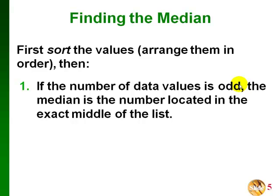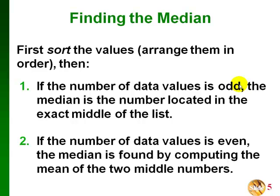If the number of data values is odd, then the median is just the number located in the exact middle of the list. If the number of data values is even, there will actually be two numbers in the exact middle of the list. We find those two middle numbers and compute the mean of those two numbers — we add the two numbers together and divide by two.